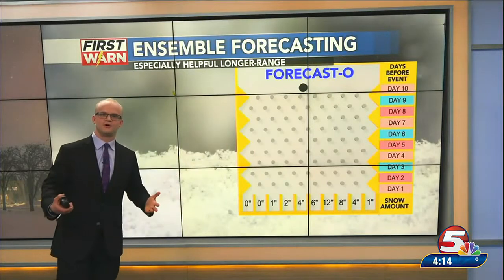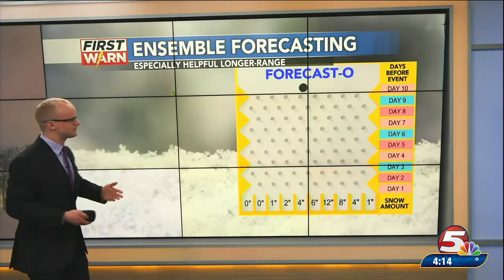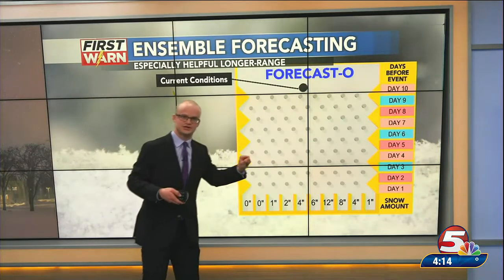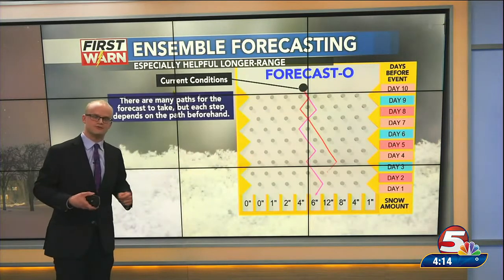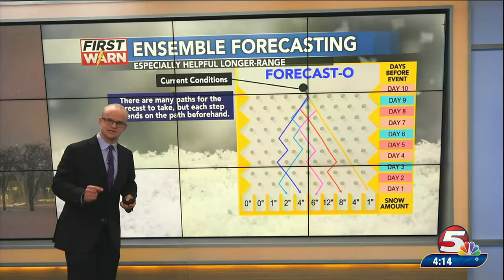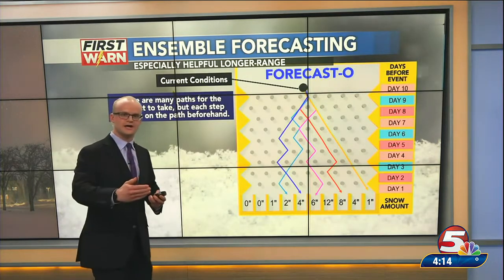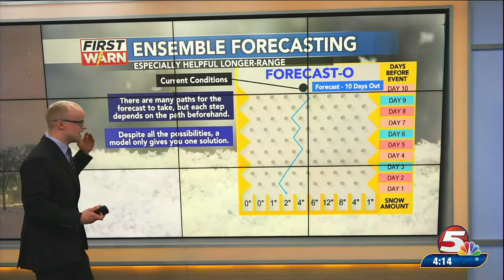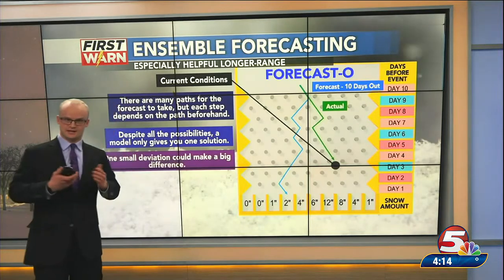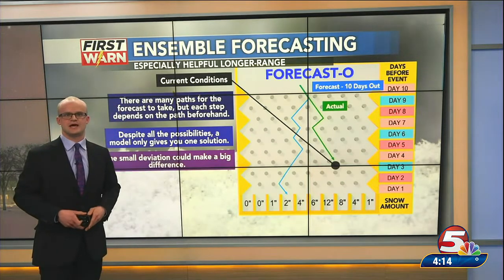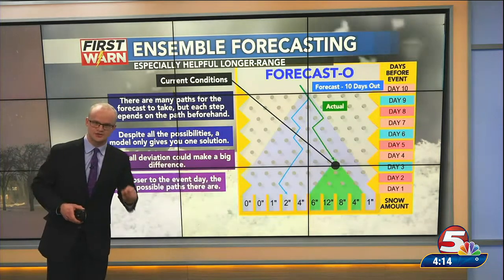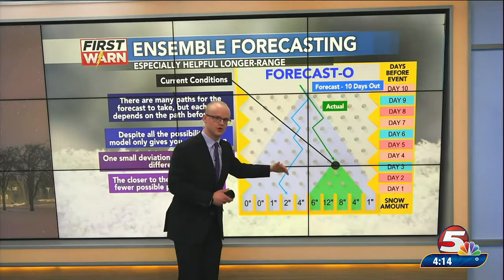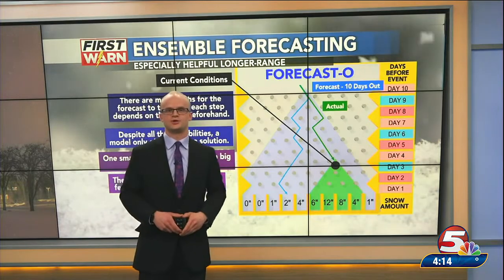Here's an example with snowfall forecasting, especially on the longer range — there are a lot of different possible outcomes based on current conditions, and if those current conditions have slight errors, even more variation results. To account for that, we use ensemble forecasting to slightly tweak the initial conditions and run the forecast model up to 50 different times. We get a wider envelope of possible solutions, giving us a much better prediction and better information about what will happen, instead of just focusing on one deterministic outcome.